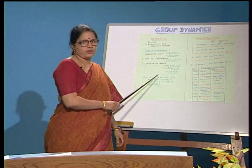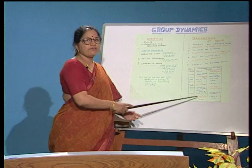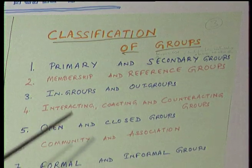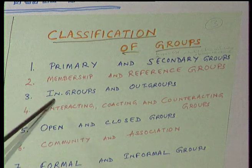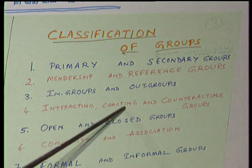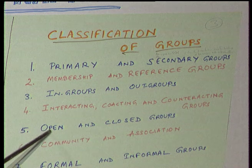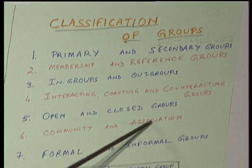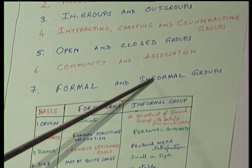For clarity, groups are classified in different ways: one, primary and secondary groups; two, membership and reference groups; three, in-groups and out-groups; four, interacting, co-acting, and counteracting groups; five, open and closed groups; six, community and association; and seven, formal and informal groups.